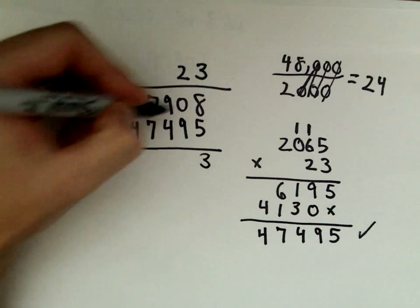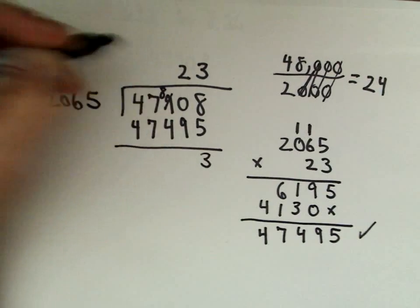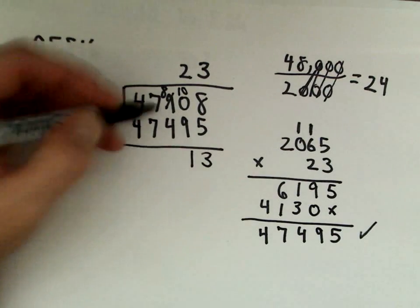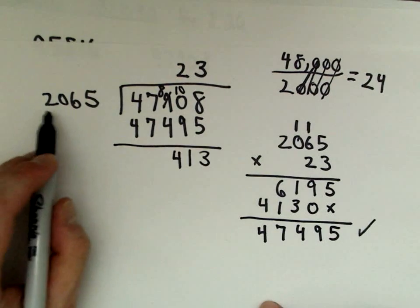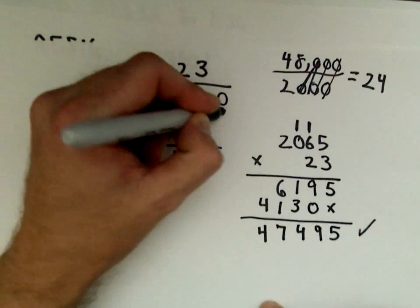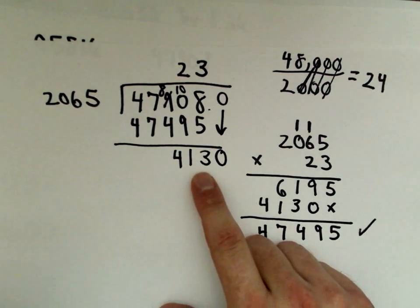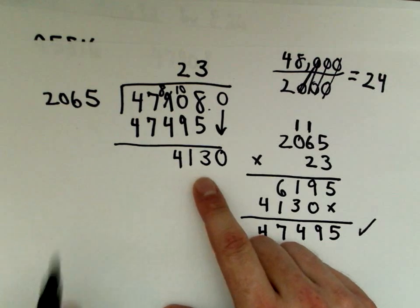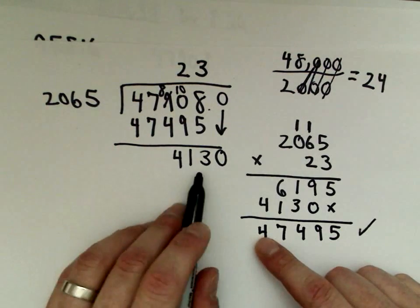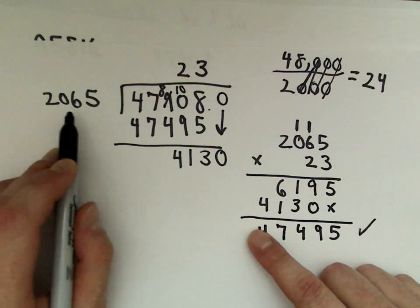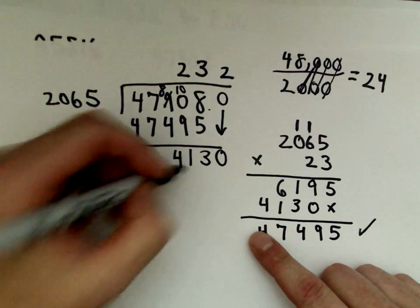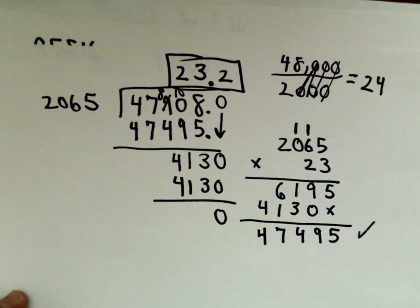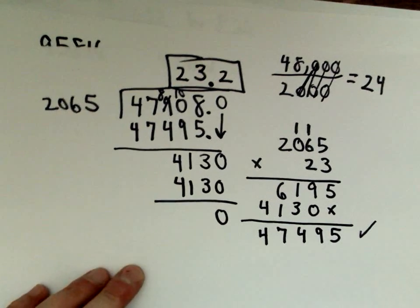So now we've got to do the subtraction. 8 minus 5 is 3. I can't do 0 minus 9, so I've got to borrow. Make the 9 into an 8, make this 10. 10 minus 9 is 1. 8 minus 4 is 4. Now we need to drop down our 0. And now I'm in business. Because 2,065 goes into 4,130 how many times? We already did that earlier in our reduction. 2,065 multiplied by 2 is going to give me 4,130 with 0 remainder. So lo and behold, we've now got our solution. 23.2 is going to be the correct answer in this case.